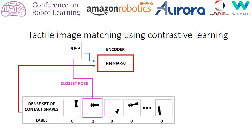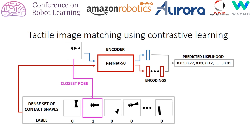We encode the contact shapes using a ResNet-50, computing encodings for each of them. Then we compute the distance between encodings and apply a softmax to predict the likelihood of each element in the grid being the closest one to the randomly generated pose.